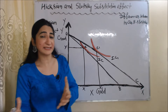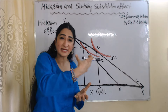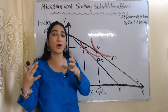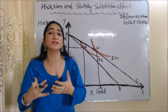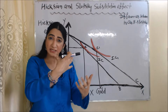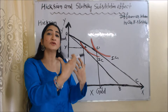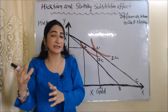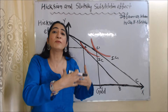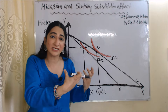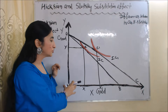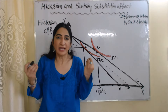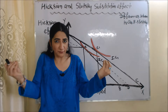Why has the consumer increased the quantities of X good at new equilibrium point E1? Because now X has become cheaper — the price of X has reduced. The purchasing power of the consumer has increased, or we can say the real income of the consumer has increased. Now he has more money to buy X good. That's why when the price of X falls, the consumer increases the quantity of X good from OX to OX1.